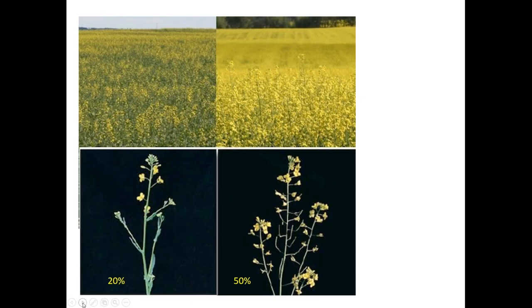The ideal timing for sclerotinia products is considered to be sometime between 20% bloom and 50% bloom. That is a little subjective, and with a stagey crop it's tough to say exactly where you are at 20% or 50%. What we're trying to do is coat the plant when blossoms are beginning to fall, because infection in canola can't happen before blossoms begin falling down into the canopy.